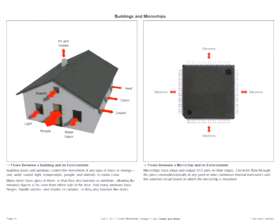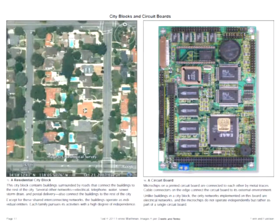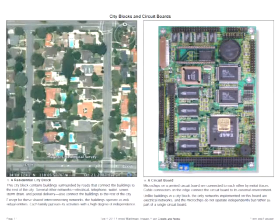A microchip, shown on the right, moves only electrons in and out. I've shown them as bi-directional, but in fact they only move in one direction at a given time. Zooming out further, here is a city residential block on the left and a circuit board on the right.